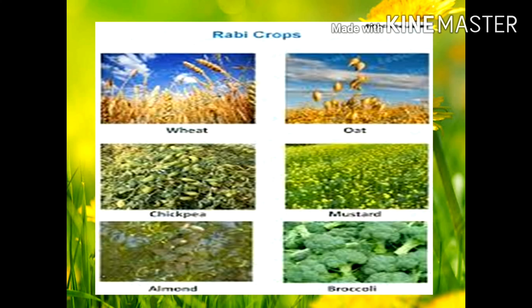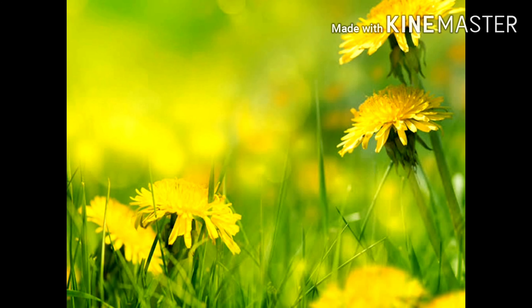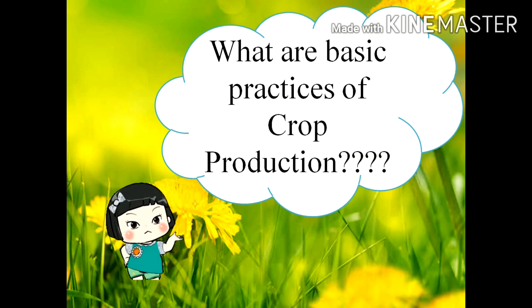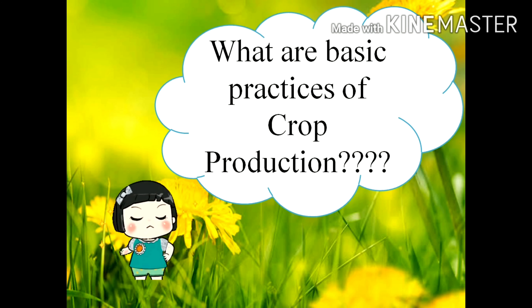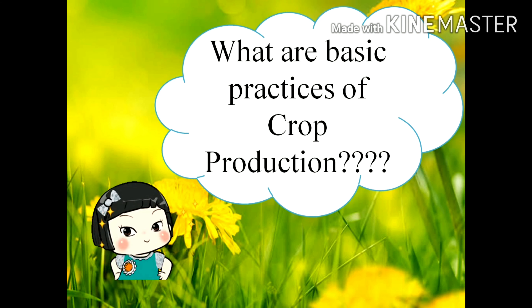So what is the difference between both? Kharif crops grow in the monsoon season and rabi crops grow in winter — this you have to remember. Now let's move to the next point: what are basic practices of crop production?